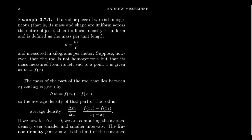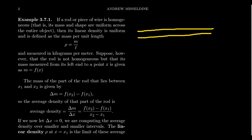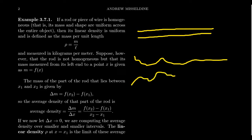Imagine we have some type of rod — a piece of wire, a pipe, a stick, a pole. A rod is homogeneous if its density is consistent throughout, the same density everywhere. Like a long copper wire or a PVC pipe from the hardware store — same density throughout. In contrast, a non-homogeneous rod might be thicker in some places and wider at others.